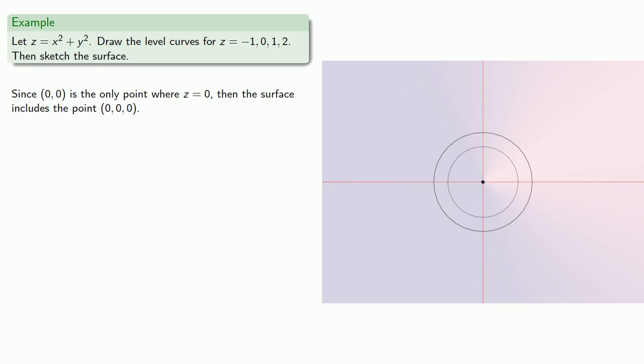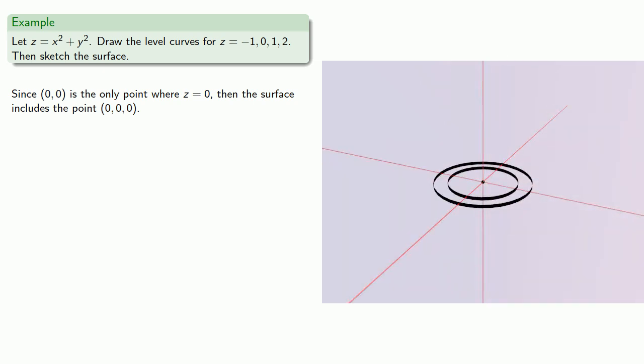So what does our surface look like in three dimensions? So since 0, 0 is the only point where z is equal to 0, then the surface includes the point 0, 0, 0.